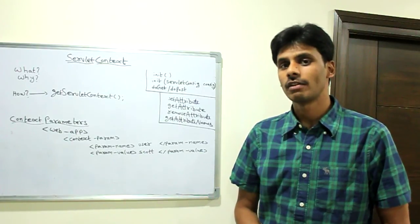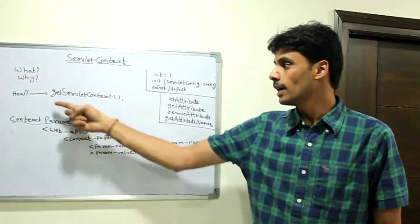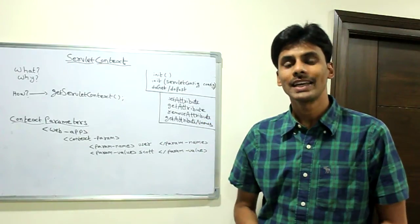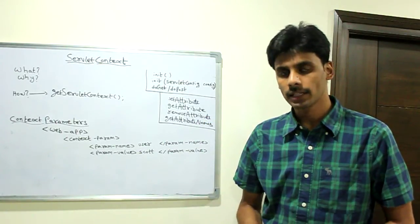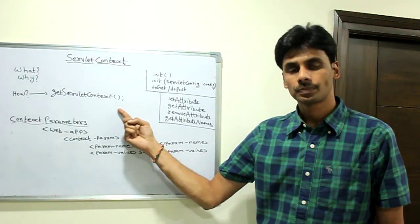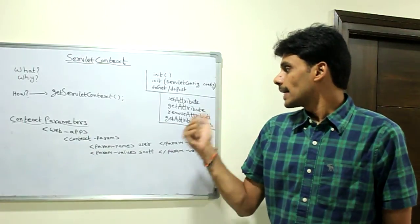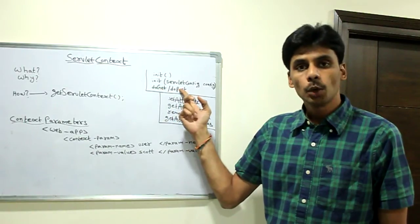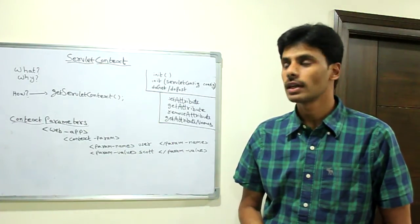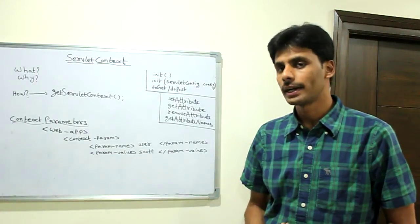Within our servlet, we can retrieve this information or the servlet context object by calling the getServletContext method. Within your init method that doesn't take any parameters, the default init method, you can call getServletContext which is overwritten by the container. In your doGet and doPost methods, you can call getServletContext, and the container will provide you with the instance of the servletContext class.